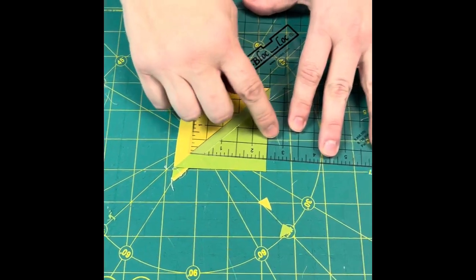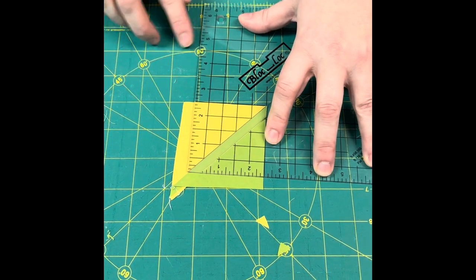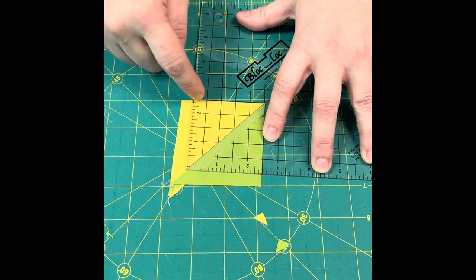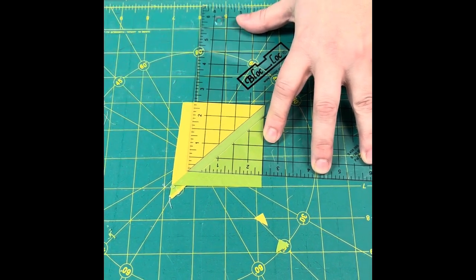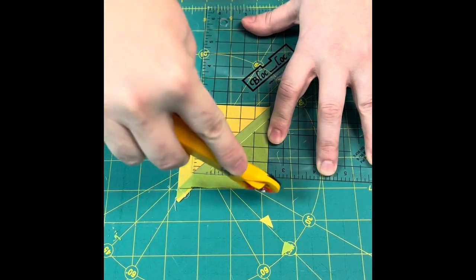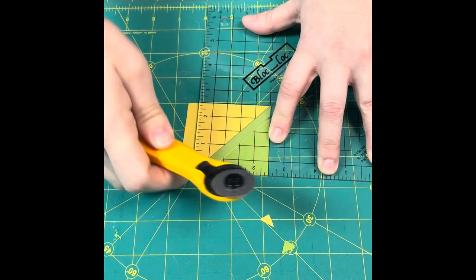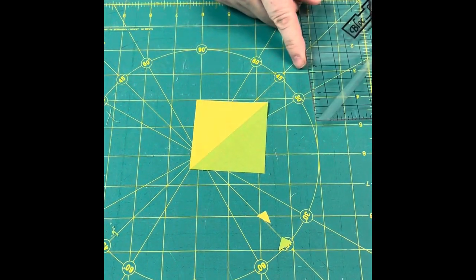So now I have it perfectly straight, perfectly aligned with my two and a half, and I'm going to go ahead and trim my other side. Now remember that my low side is here, my high side is there. I'm applying pressure in that direction to make sure that it stays nice and firm up against the seam. So I'm going to trim my second side. And here we have a perfect half square triangle.